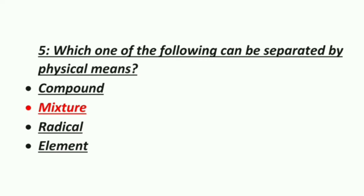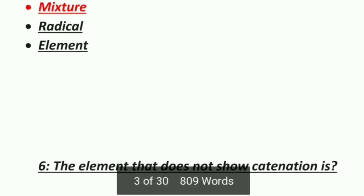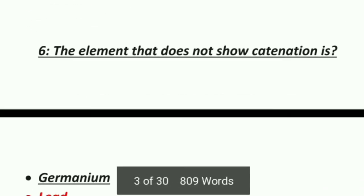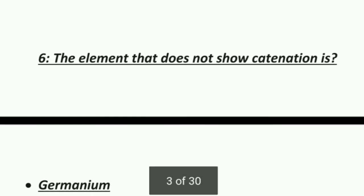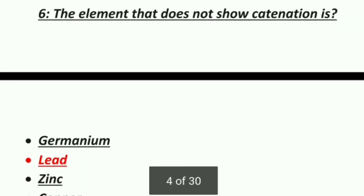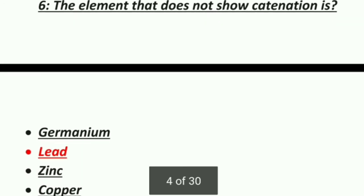Fifth MCQ: which one of the following can be separated by physical means? Option 1: Compound, Option 2: Mixture, Option 3: Radical, Option 4: Element. The correct answer is mixture — a mixture can be separated by physical means.